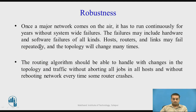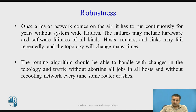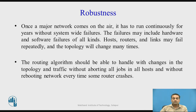The robustness property: once a major part of the network starts functioning, it must run continuously for years without system-wide failures. Hardware and software failures of hosts, routers, or links may occur repeatedly and the topology will change many times. The routing algorithm must handle these failures and topology changes without aborting traffic or rebooting the network every time a router or link goes down.